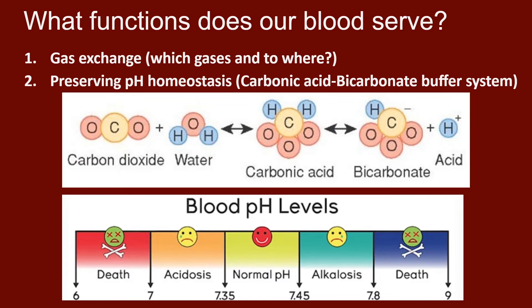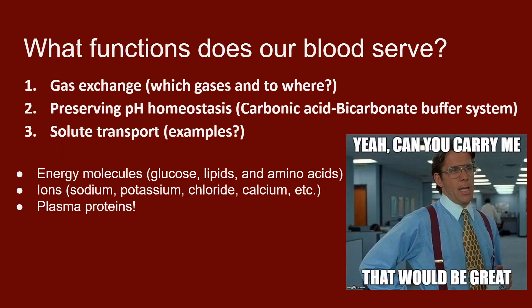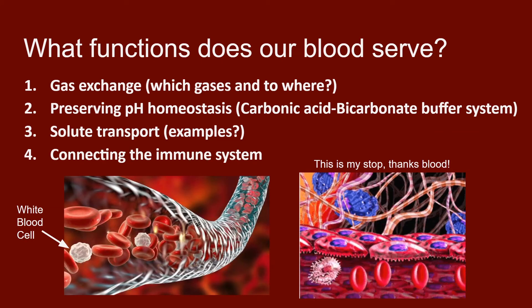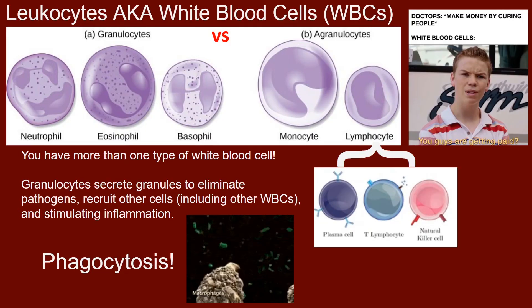In addition to RBCs carrying CO2 back to the lungs, our blood has a buffer system called the carbonic acid bicarbonate buffer system that handles free-floating hydrogen ions from things like acidic foods. Accumulation of CO2 can make the blood more acidic — a condition known as acidosis. Since pH changes negatively influence RBCs' ability to transport gases, this homeostatic set point is tightly regulated. Blood also serves as a superhighway for moving vital nutrients and ions to different tissues, carrying waste to be filtered out.